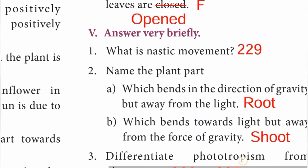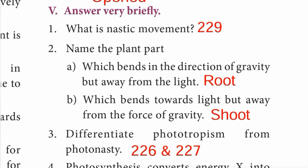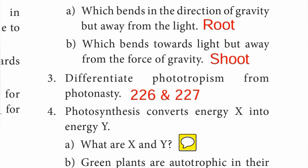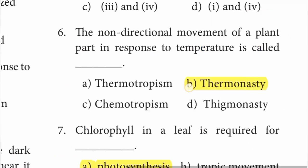Question number two: name the plant part - (a) which bends in the direction of gravity but away from light. Answer is root. (b) Which bends towards light but away from the force of gravity. Answer is shoot. So root bends away from light and shoot bends away from gravity.